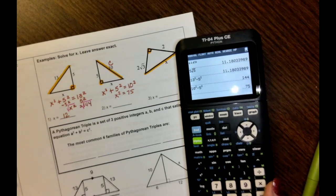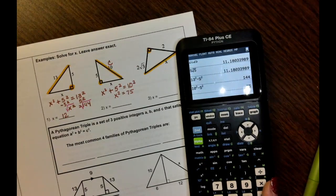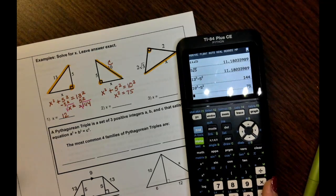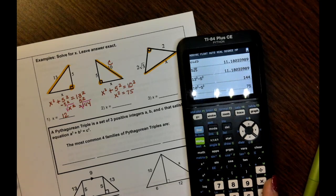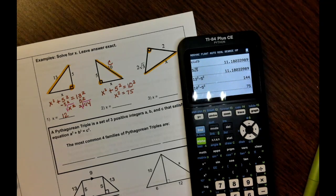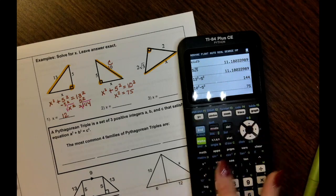It's not 10 minus 5 and then square it. It's 10 squared minus 5 squared. If you're going to do it all at once, you have to square it as you go. You can't do subtraction and then square. Order of operations says that you have to do those exponents first.